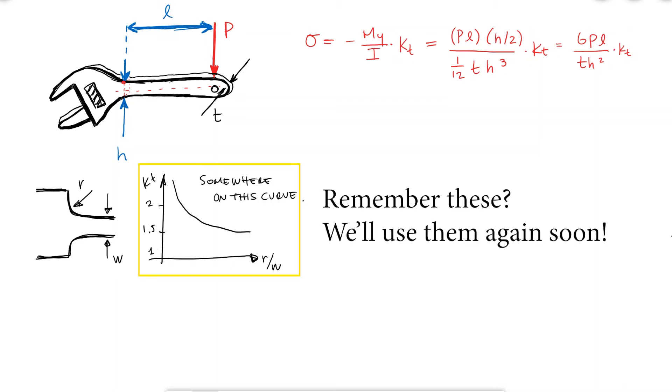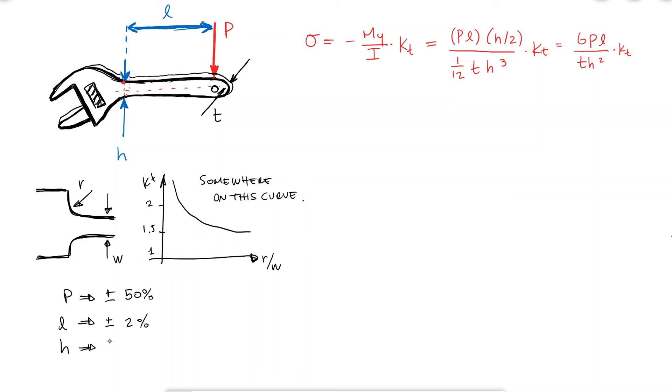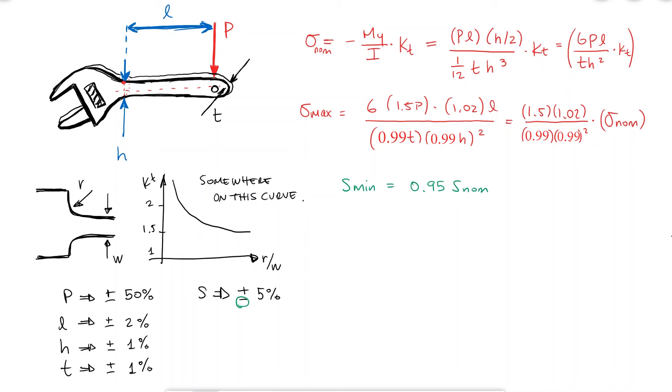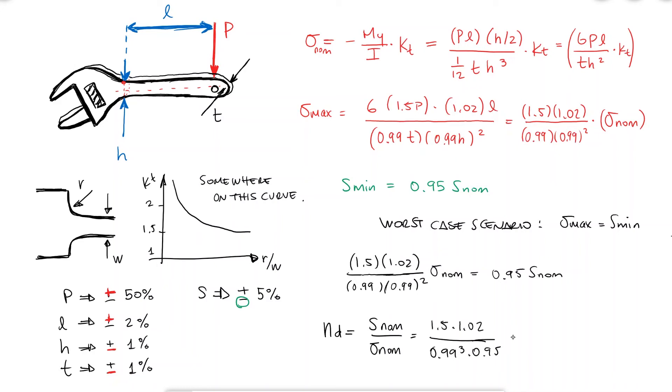I know that the maximum stress will occur when that load is farthest from the stress point, and when both dimensions of the cross section area H and T are lowest. If the yield strength has an uncertainty of 5%, I know that I should compare this maximum stress to the worst case scenario strength, which is the minimum. Since my design factor is the nominal strength over the nominal stress, I find that it has a value of 1.66. Notice that I was able to find a design factor without knowing the actual values of my variables, only their uncertainty.